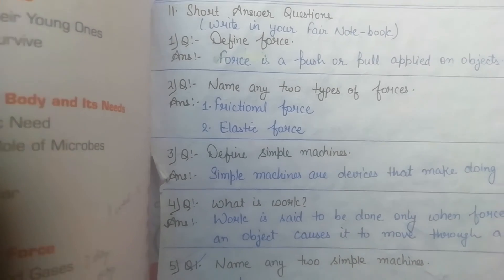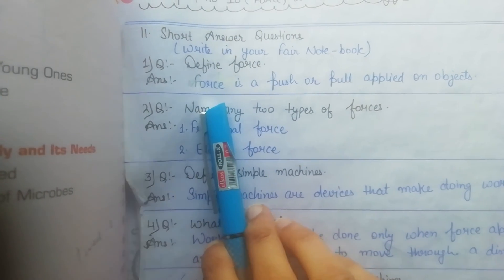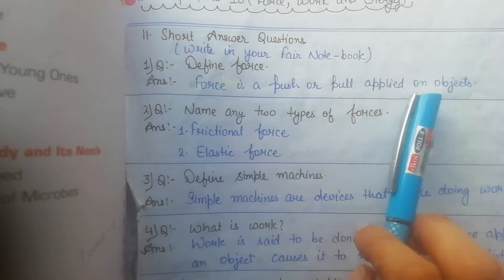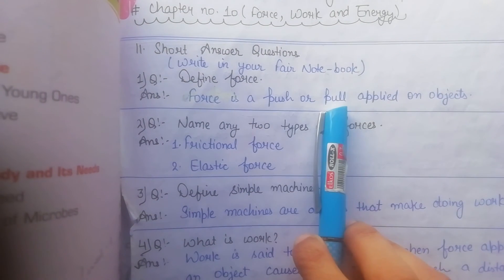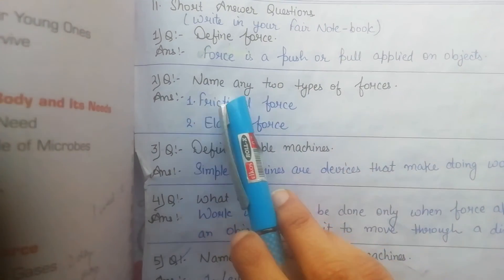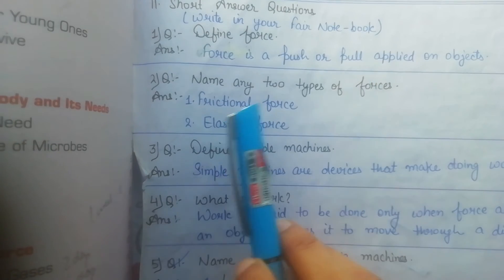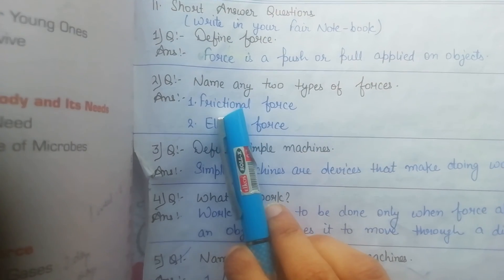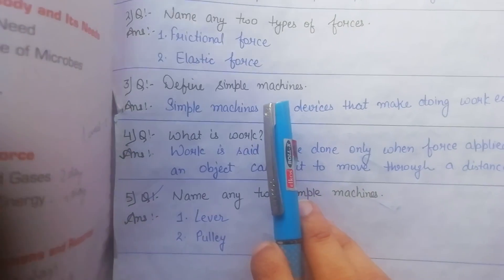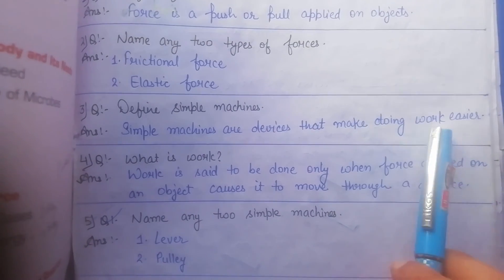Let's move to the question answers. Define force. Force is a push or pull applied on objects. Now name any two types of forces. Define simple machines. Simple machines are devices that make doing work easier.